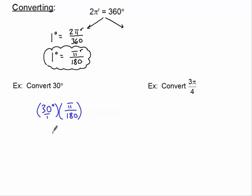If I put that over 1, I realize that I have 30π divided by 180, and 30 divided by 180 reduces to π/6. So 30 degrees would convert to π/6 radians.